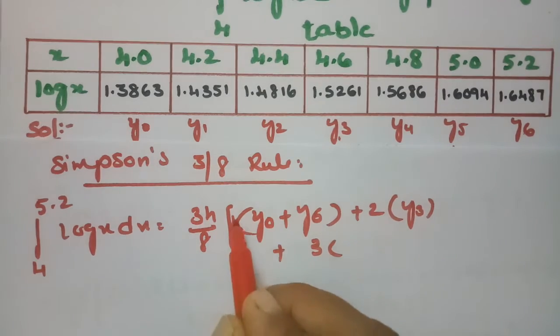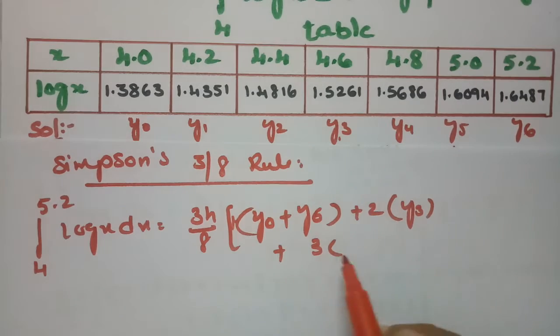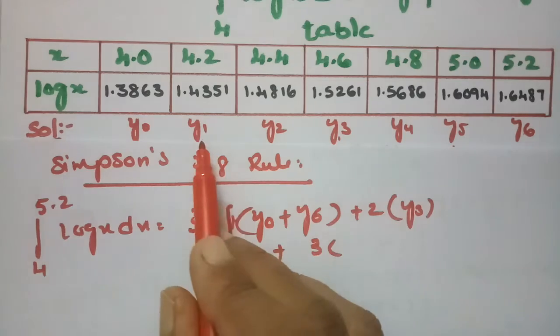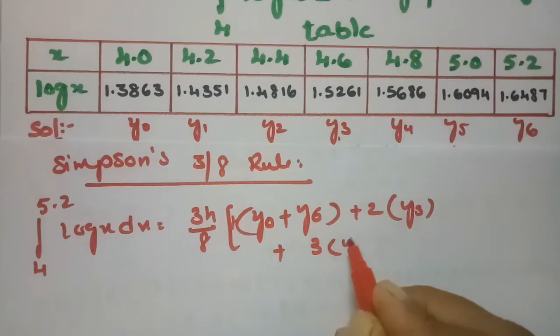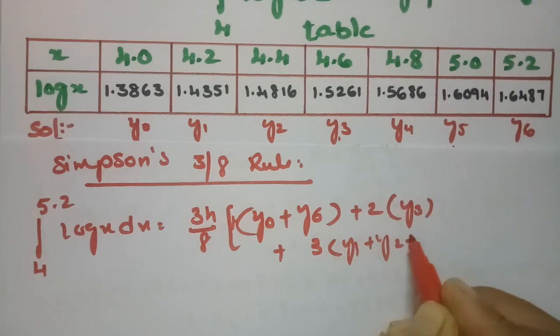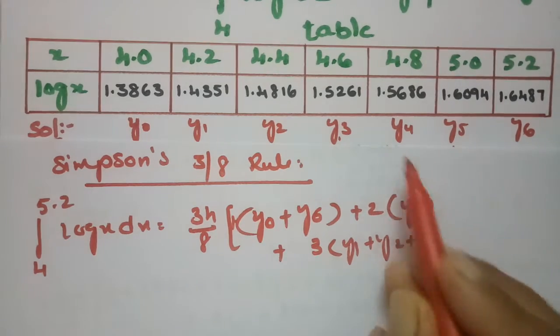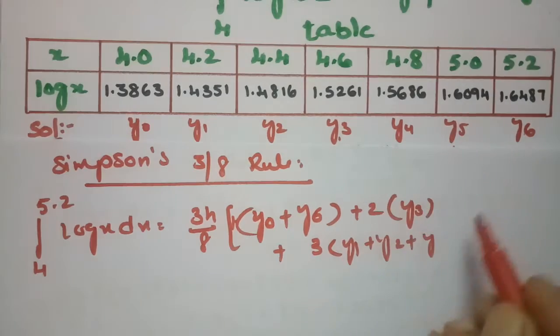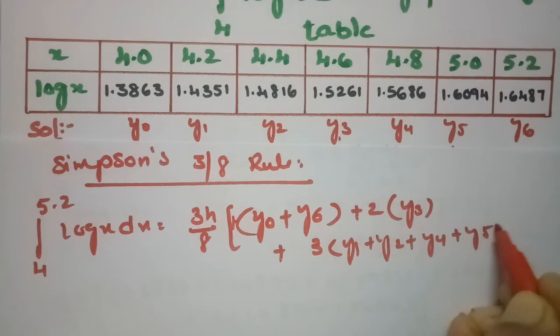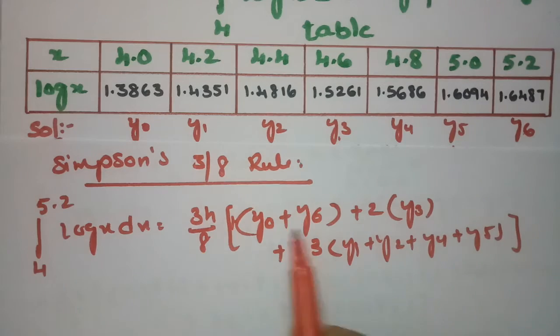Then 3 times the remaining ordinates, that is y1, y2 — y3 has already been used — then y4 and y5. Total ordinates count is 7.